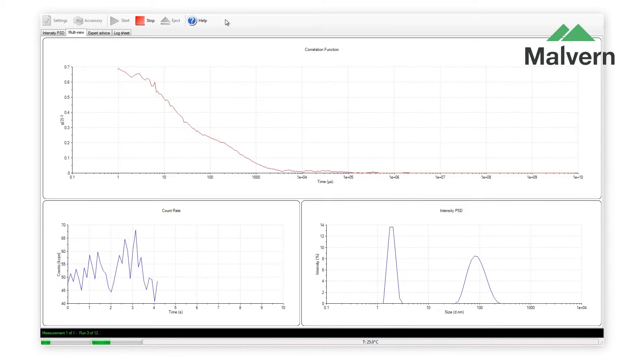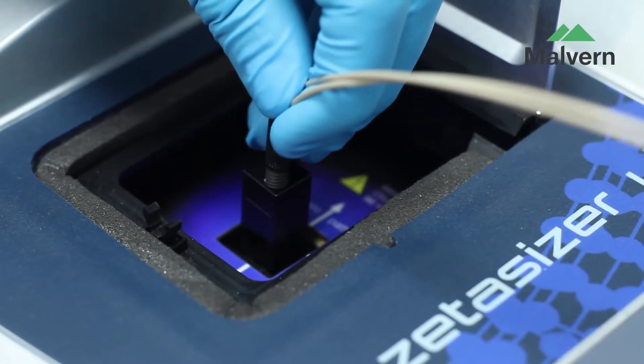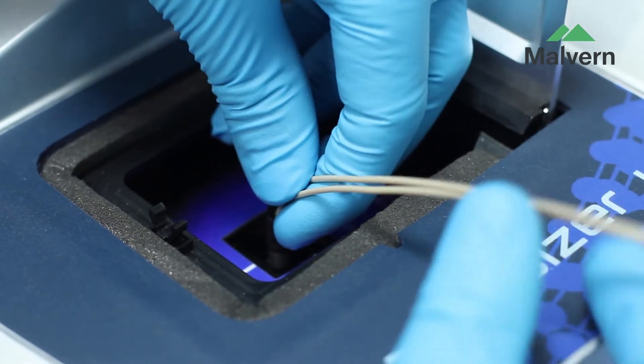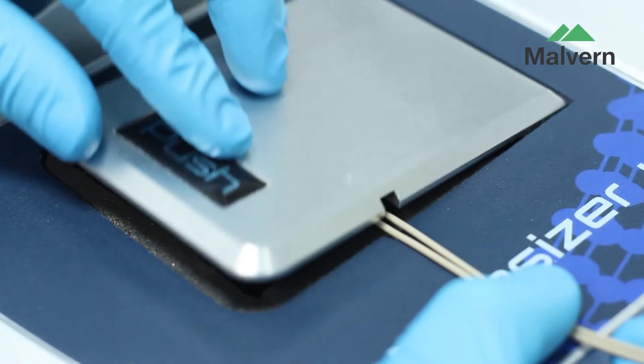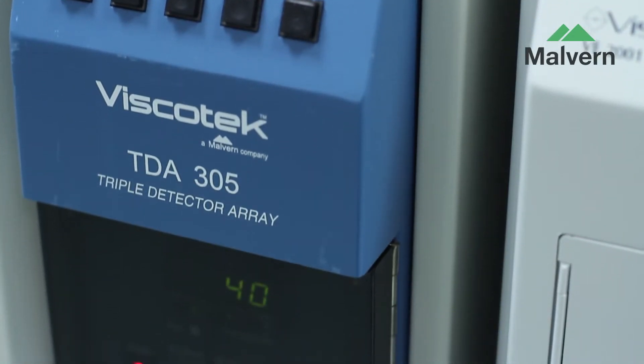The built-in protein calculators maximize the information that is extracted from the data. When attached to your SEC system, the Zetasizer Micro V is a sophisticated and powerful light-scattering detector, generating high-quality light-scattering chromatograms.